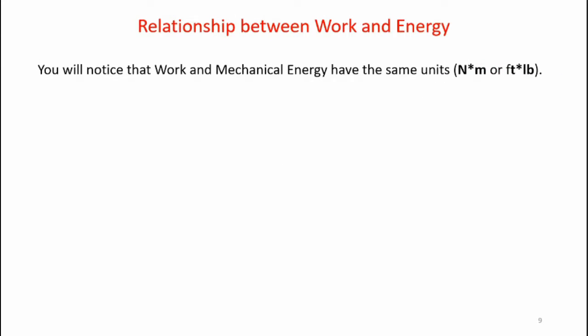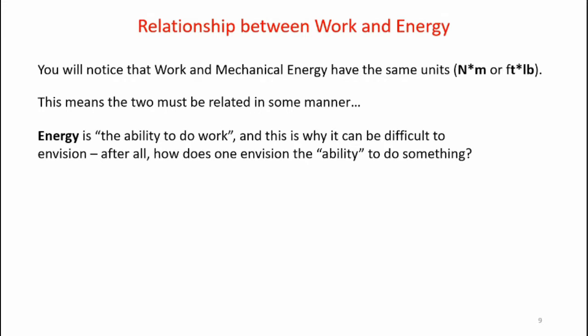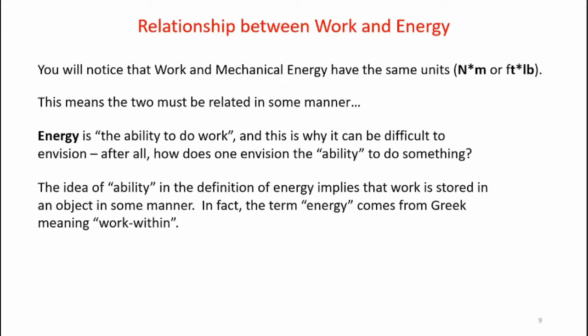If you examine the equations for gravitational potential energy and kinetic energy, you'll notice that the units come out to be Newton meters or foot-pounds. This means the units for work are the same as the units for mechanical energy, so the two must be related in some manner. The definition of energy is actually the ability to do work, and this is why it can be difficult to envision — after all, how does one envision the ability to do something? The idea of ability in the definition of energy implies that work is stored in an object in some manner. In fact, the term energy comes from Greek meaning 'work within.'